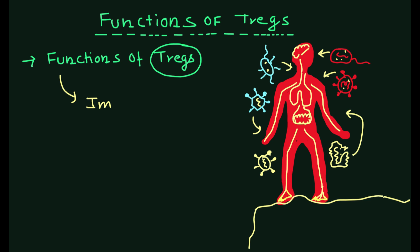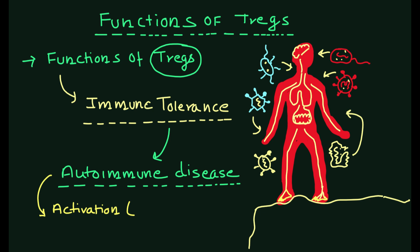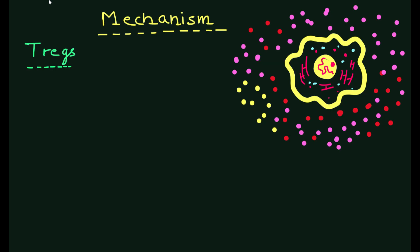They do this by suppressing the activation and proliferation of self-reactive T cells which could otherwise cause damage to the host tissue. Tregs achieve this suppression through several mechanisms.